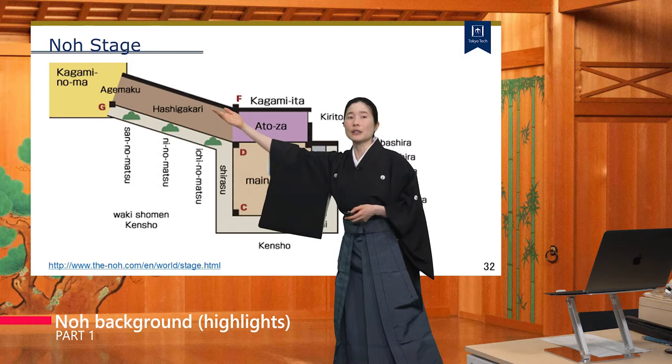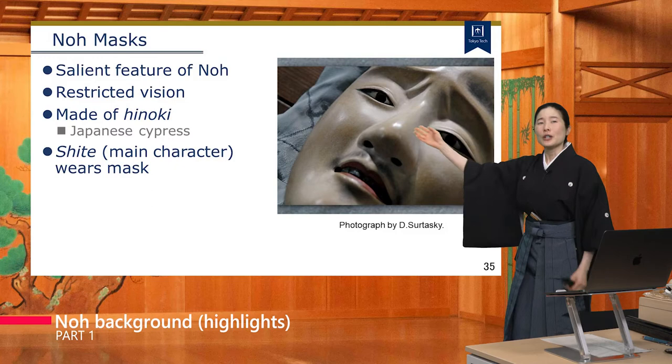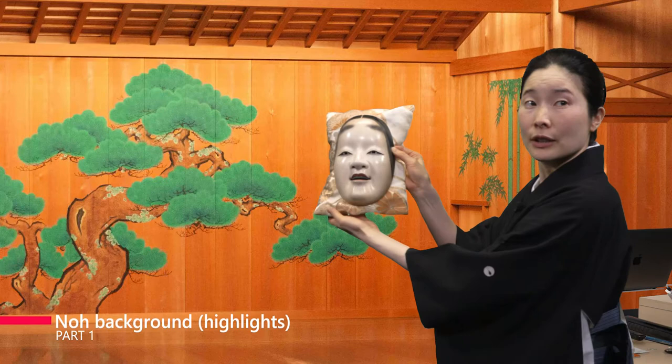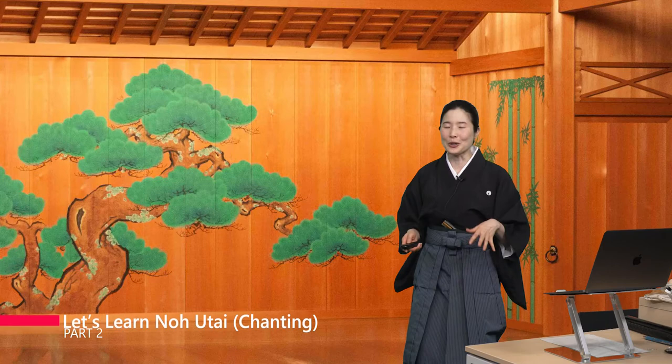So the agemaku — people coming in from here — to the hashigakari, to the main stage. A salient feature of No is very restricted vision. Looking up looks happy, and then looking down looks sad.